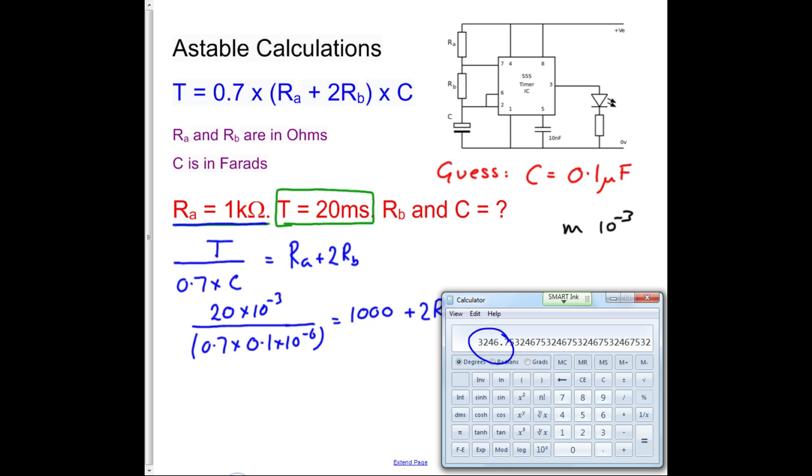So let's go and get our Windows calculator and work that out. I'll just rub that off, so we'll go 20 exponent minus 3, that's time period, divided by, open brackets, 0.7 multiplied by 0.1 exponent minus 6, close brackets, equals. Now it's a very large number, that's a very large number, this number here is our 1,000 plus 2RB, so we're going to approximate that to 286K.